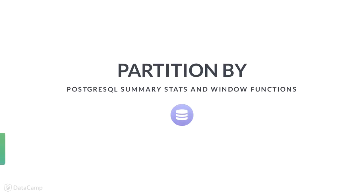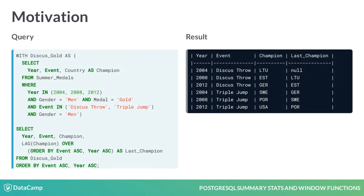You now know how to change the behavior of a window function with the ORDER BY subclause. Another way to change its behavior is with the PARTITION BY subclause. Let's build on last video's example to see why partitioning is useful. In addition to discus throw champions, this query includes triple jump champions as well.